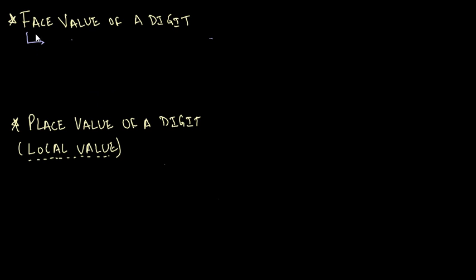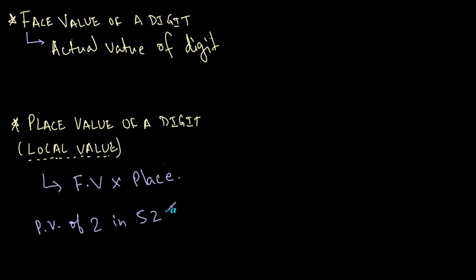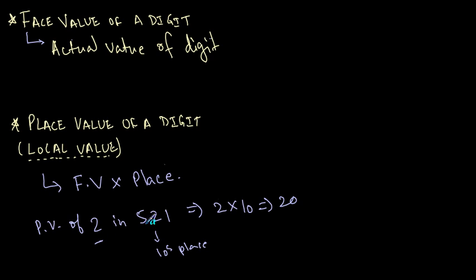Every digit has got a face value and a place value. The face value of a digit is simply the actual value of that digit. The place value of a digit — also known as the local value — is its face value multiplied by its place. For example, the place value of 2 in 521 would be 2 (its face value) multiplied by its place, which is the tens place, so 2 into 10 equals 20. The place value of 2 in this number is 20.